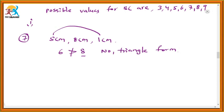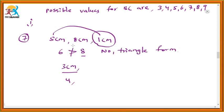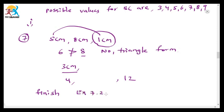Suppose this measurement is changed — then we can construct. What will be this measurement? It will be more than 3, because the difference of 8 and 5 is 3. That is why it should be more than 3, meaning it should start from 4. And up to the sum of two sides which is 13 — the third side measurement should be less than 13, so that will be up to 12. So 4 to 12: with these measurements, we can draw a triangle. Your homework is to complete exercises 7.2, 7.3, and 7.4. Thank you.